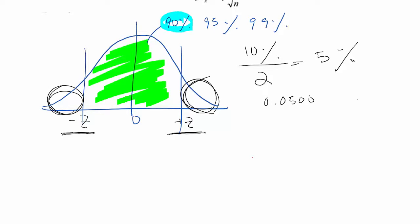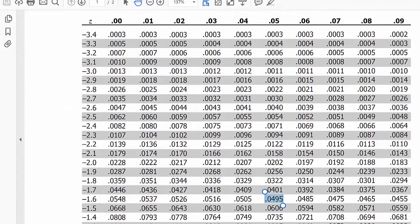I go to the z-table and find which z-score has 0.0500. As you see, we could find two z-score values, 0.0505 and then 0.0495.